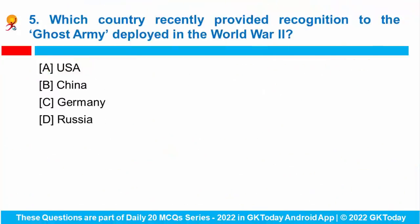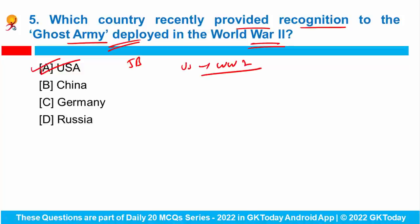Question number five: which country recently provided recognition to the Ghost Army deployed in World War II? US President Joe Biden signed into law a bill titled the Ghost Army Congressional Gold Medal Act to provide recognition to the Ghost Army — a tactical deception unit deployed by the US during World War II. There are just nine surviving veterans of the Ghost Army across the US.